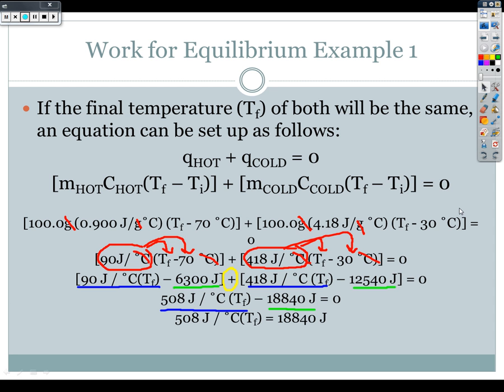Now I want to get T_f because I'm trying to solve for T_f, so I want to get it by itself. So I've got this negative number, so I can add it to the other side and that'll get me T_f times 508 joules per degree Celsius is equal to 18,840 joules. To get T_f by itself, I can divide by 508 joules per degree Celsius.